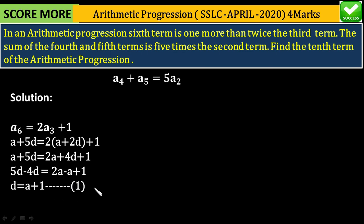Now solve this another equation. a₄ we can write as a plus 3d, a₅ we can write as a plus 4d, equals five times a₂ which is a plus d. Then simplify: 2a plus 7d equals 5a plus 5d, so 2d equals 3a.